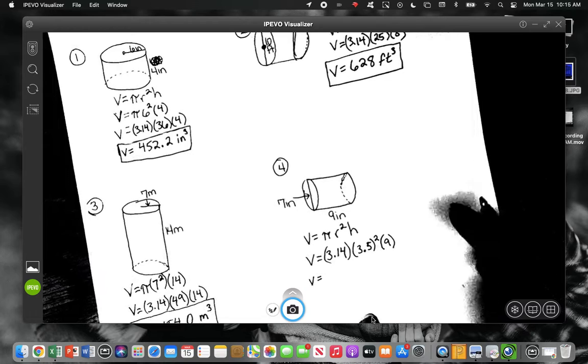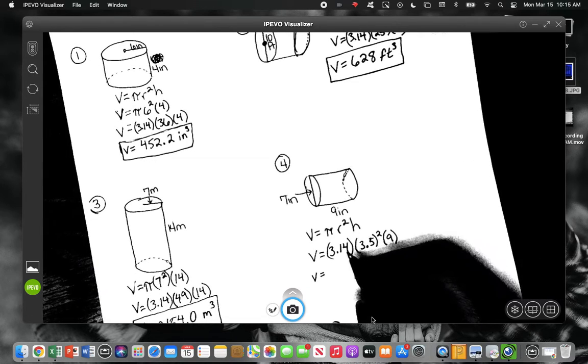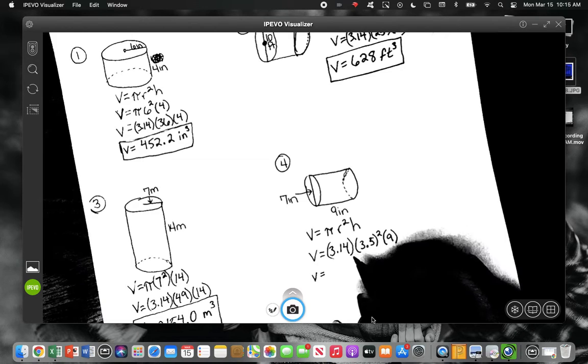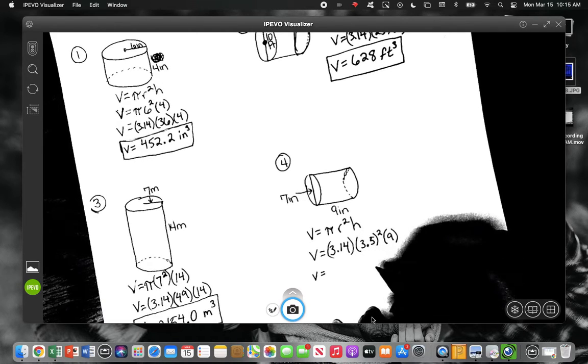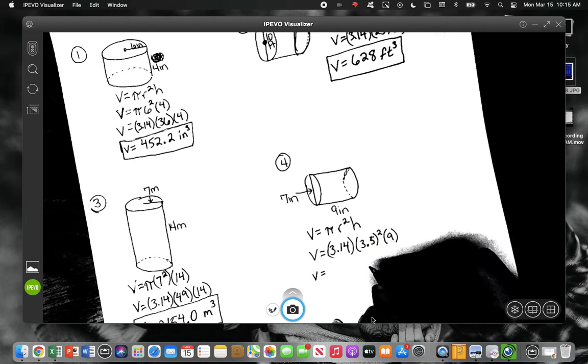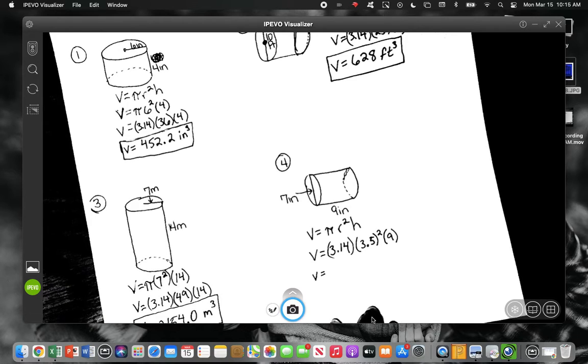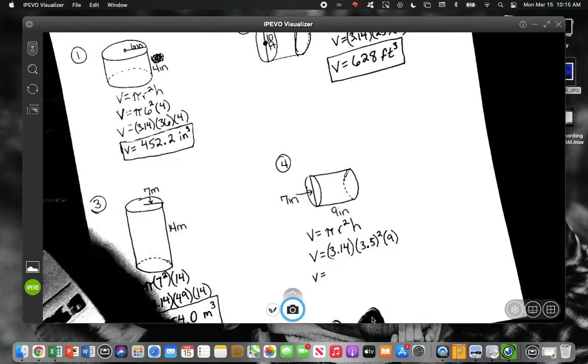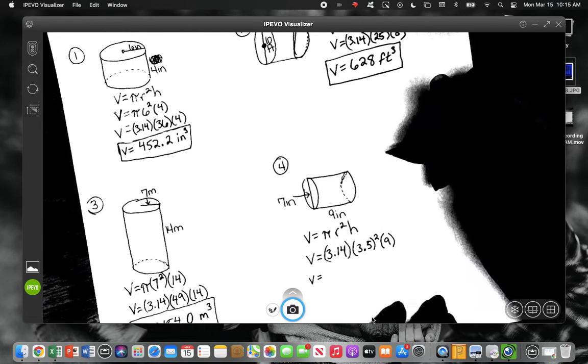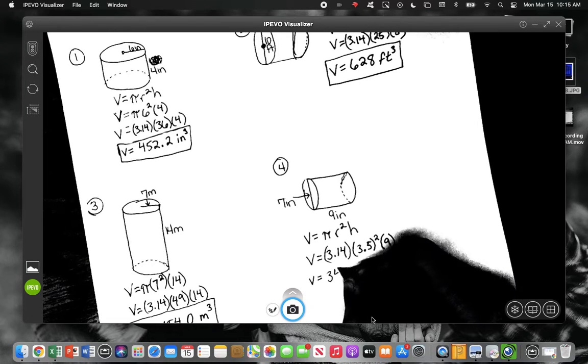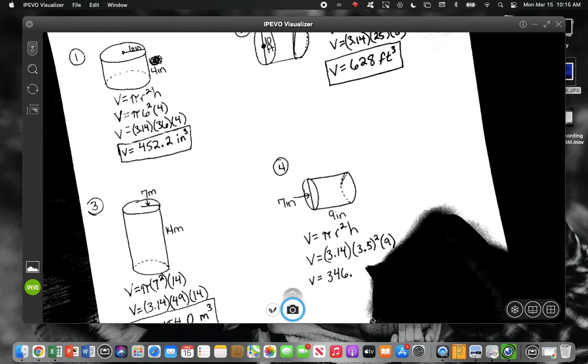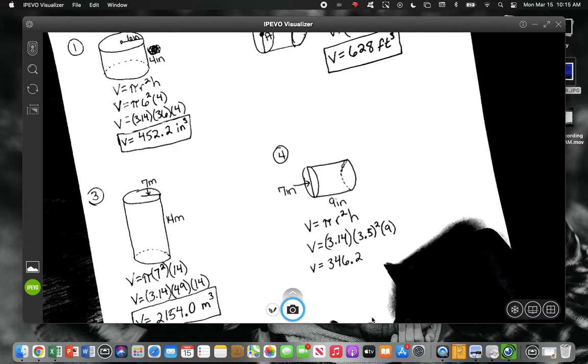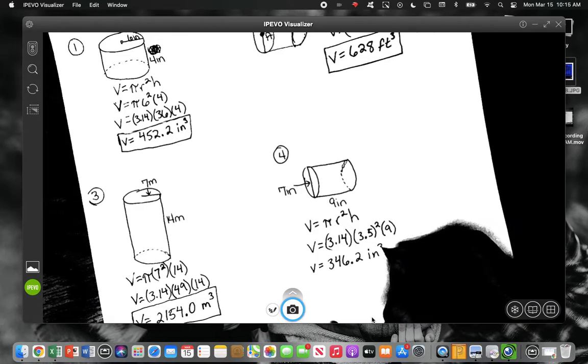What did we get? Alright, so I've heard a few different things. Did everyone notice that that's the diameter? Yeah. Alright, I got 346.19, so I'm going to round that to what? 346.2. Yep. Did you put your label on it? Make sure you put your label.